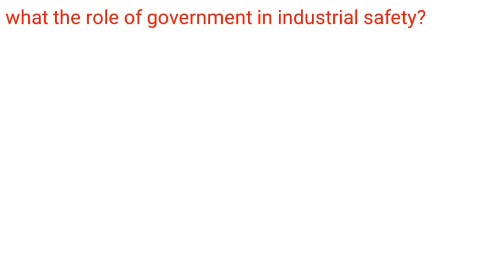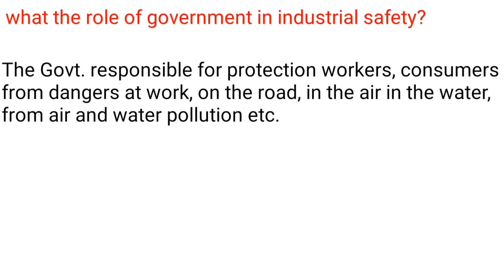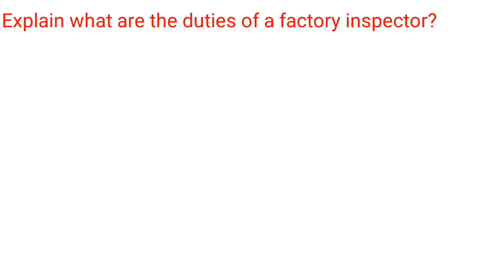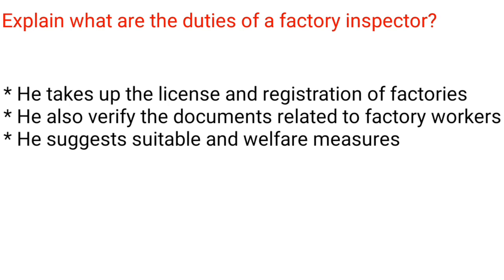What is the role of government in industrial safety? The government is responsible for protecting workers and consumers from dangers at work, on the road, in the air, in the water, and from air and water pollution. What are the duties of a factory inspector? He takes up the licensing and registration of factories, verifies documents related to factory workers, and suggests suitable safety and welfare measures.